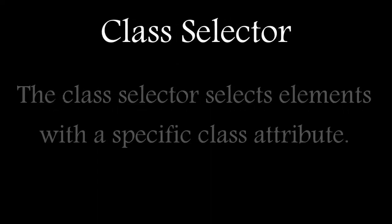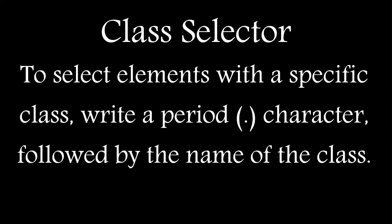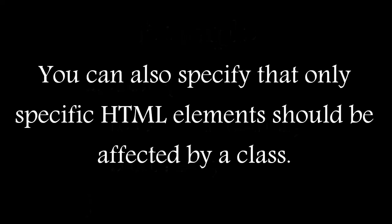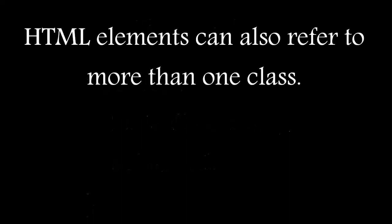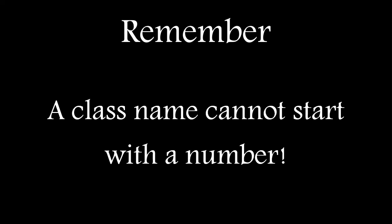Class selector: The class selector selects elements with a specific class attribute. To select elements with a specific class, write a period character followed by the name of the class. In this example, all HTML elements with class equals 'center' will be red and center aligned. You can also specify that only specific HTML elements should be affected by a class. In this example, only paragraph elements with class equals 'center' will be center aligned. HTML elements can also have more than one class. Remember, a class name cannot start with a number.